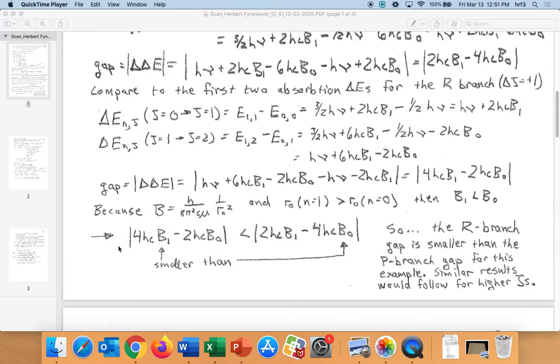So then b1 will be less than b0. This will be smaller. This quantity that we're getting from here on the R branch will be smaller than this quantity on the P branch. So the gap in the R branch is smaller than the gap in the P branch for this example. If you continued and looked at more gaps, you'd see similar results. That explains why the gaps in our spectrum aren't exactly evenly spaced, because it's not exactly a rigid rotor.